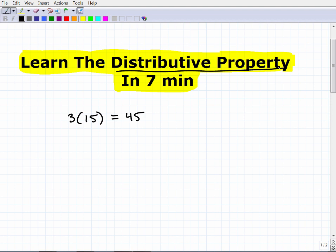What the distributive property is, it's another way to do multiplication. The distributive property is another way to do multiplication. And it's an extremely powerful way to do multiplication. So let's take a look at this problem. Three times 15. Instead of writing 15 as just 15, let's do it this way. Three times 10 plus five. So 10 plus five is 15, right? So these two problems are mathematically equivalent. They are the same problem.